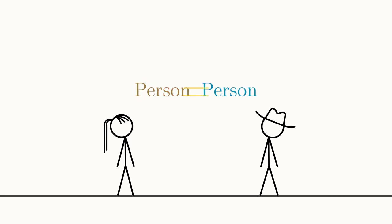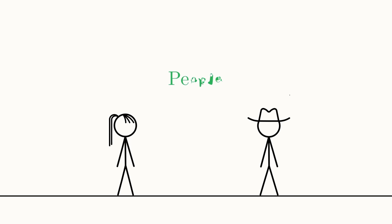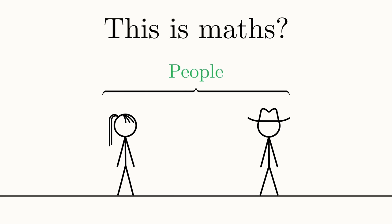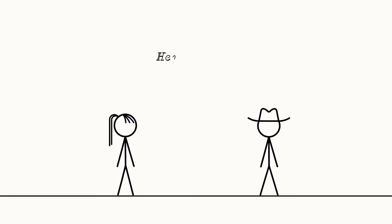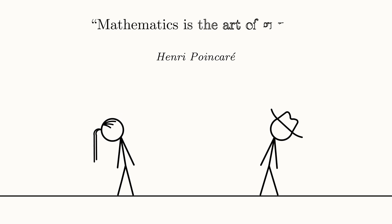Whilst this concept of giving a common name to distinct objects seems almost painfully trivial, it has been argued to be the very essence of mathematics itself. Indeed, the legendary French mathematician Henri Poincaré claimed that mathematics is the art of giving the same name to different things.